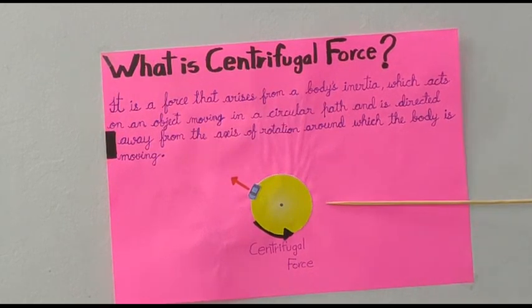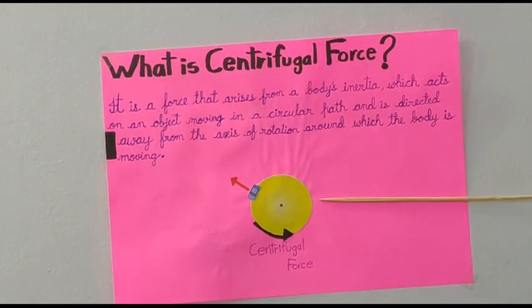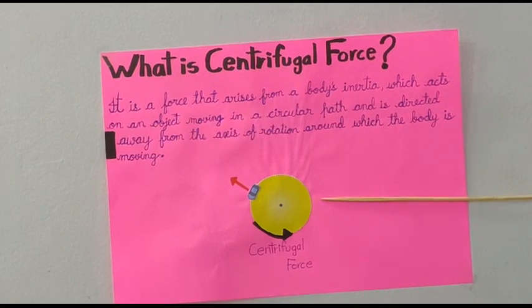As you can see here in the diagram below, when a car moves in a circular path, it slightly goes outwards. This is because of Centrifugal Force.